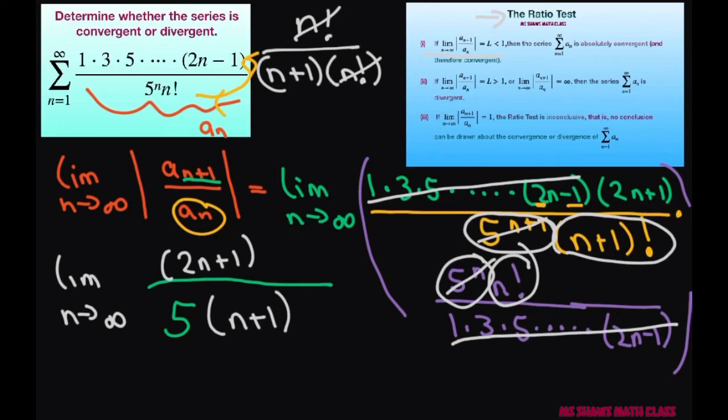And to simplify all this, it's going to be the limit as n approaches infinity, and we're going to have (2n+1) divided by (5n+5). If you divide each piece by n, you're going to get 2/5, and this is less than 1, so the series converges.